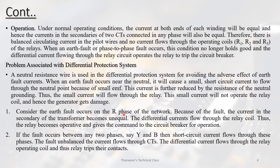When an earth fault occurs on the R phase, the R phase current is fixed at one part of the winding. The secondary of the current transformer becomes unbalanced. As a result, differential currents flow through the relay, making the relay operative and giving the command to the circuit breaker to trip. Similarly, if a fault occurs between any two phases such as Y and B, the short-circuit current flows through those phases and through the CTs, causing differential current to flow through the relay operating coil, which trips the breaker.